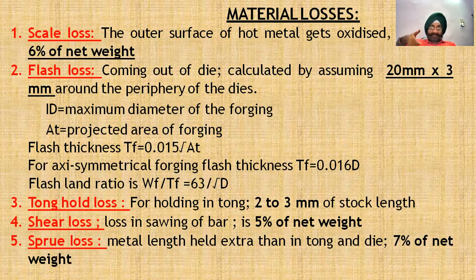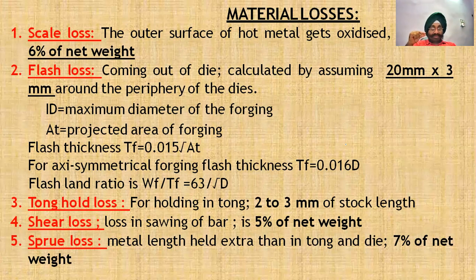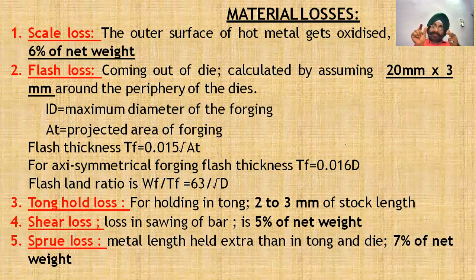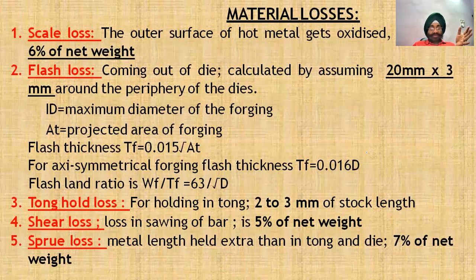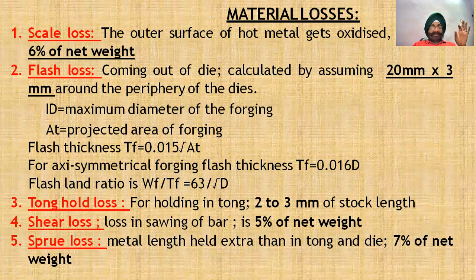Tong hold loss is the material held in tongs during forging. It is assumed as 2 to 3 mm of stock length — volume equals cross-sectional area multiplied by 2 mm. Shear loss is 5% of net weight. Sprue loss is the extra metal length not in tongs nor in die, calculated as 7% of net weight. So the total material losses include scale loss, flash loss, tong loss, shear loss, and sprue loss.